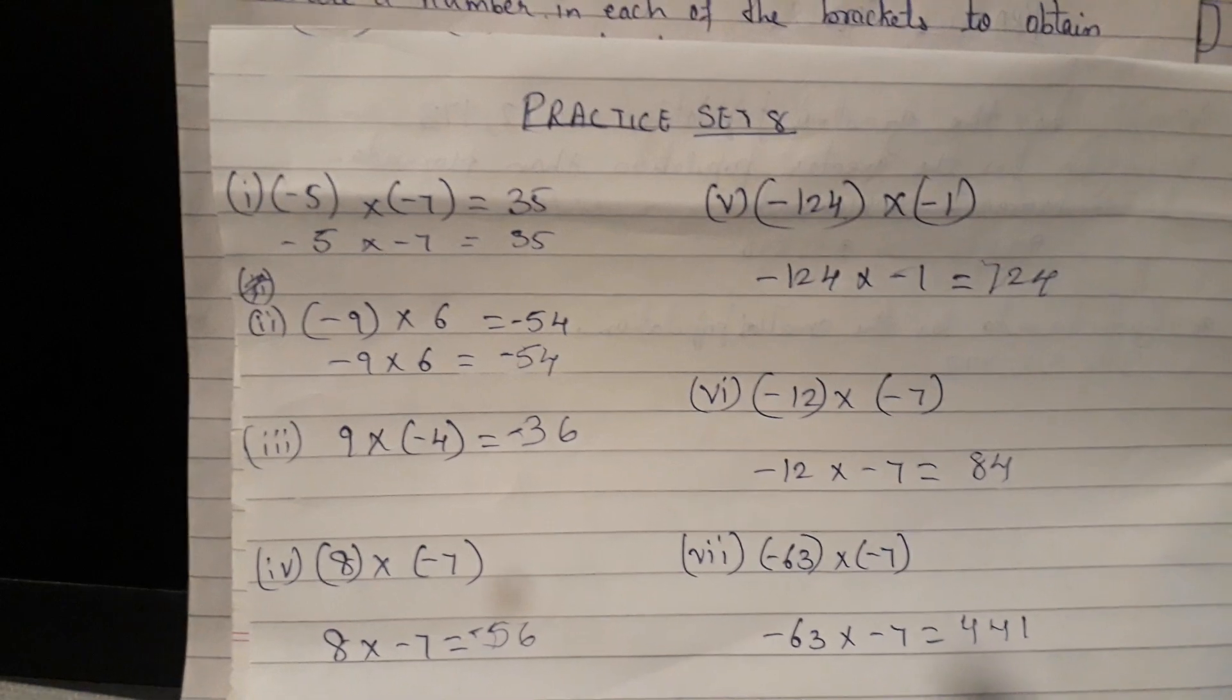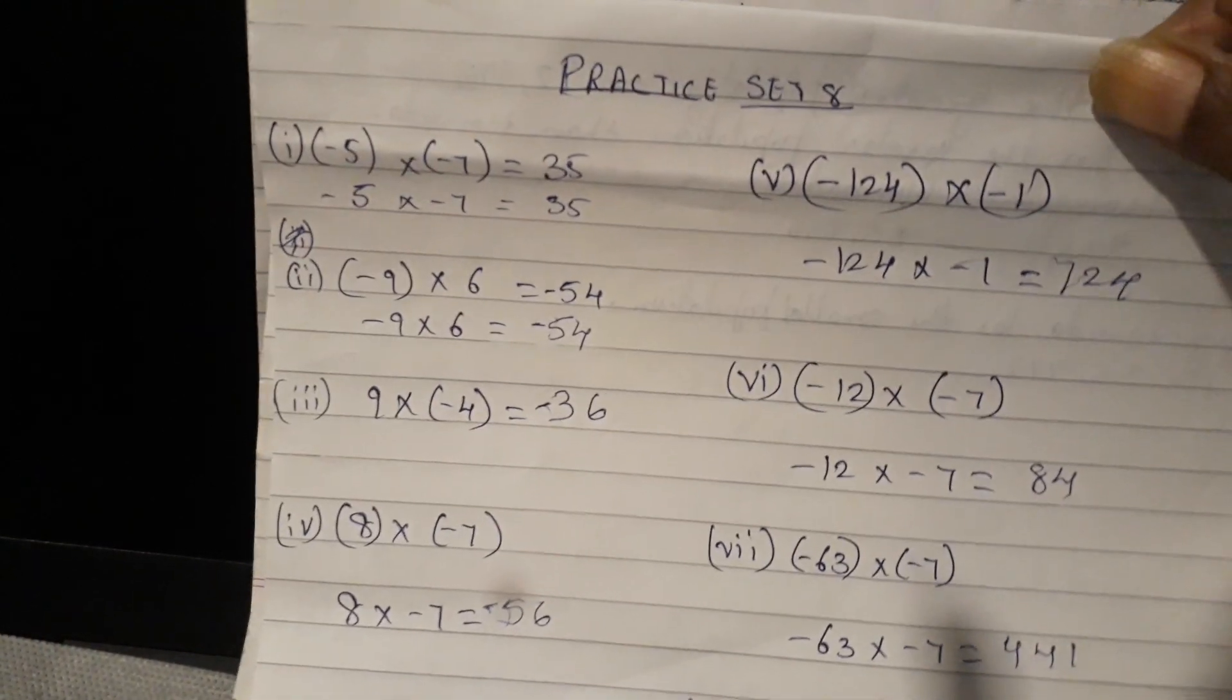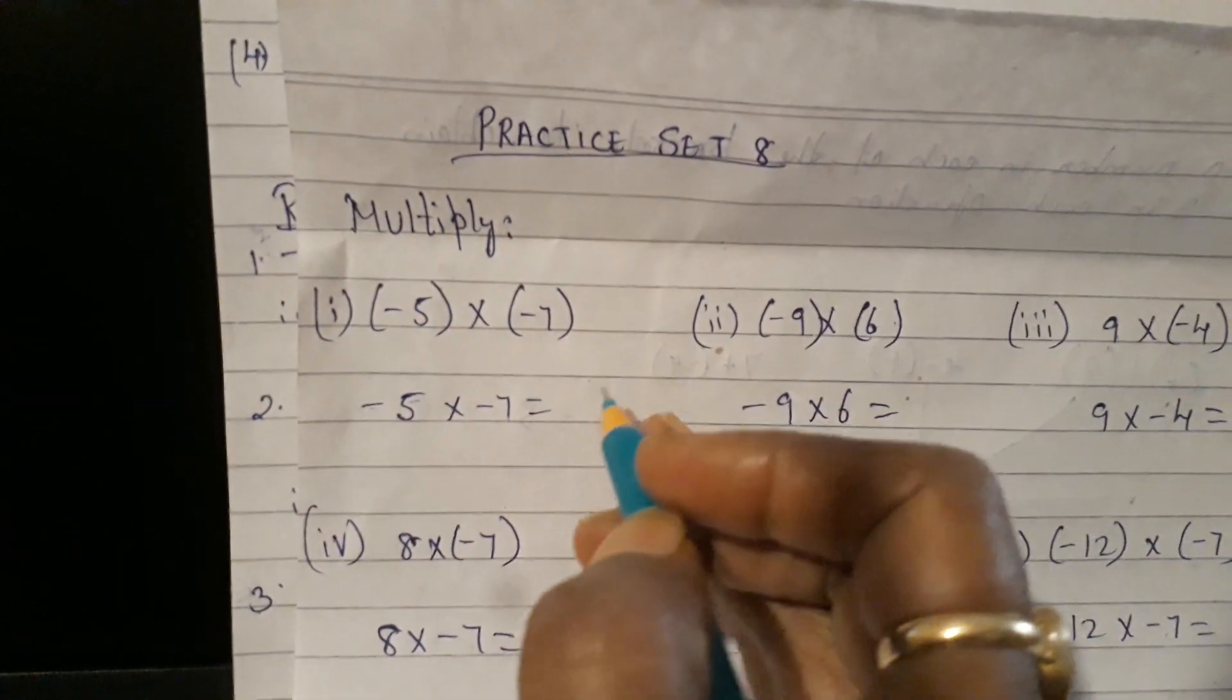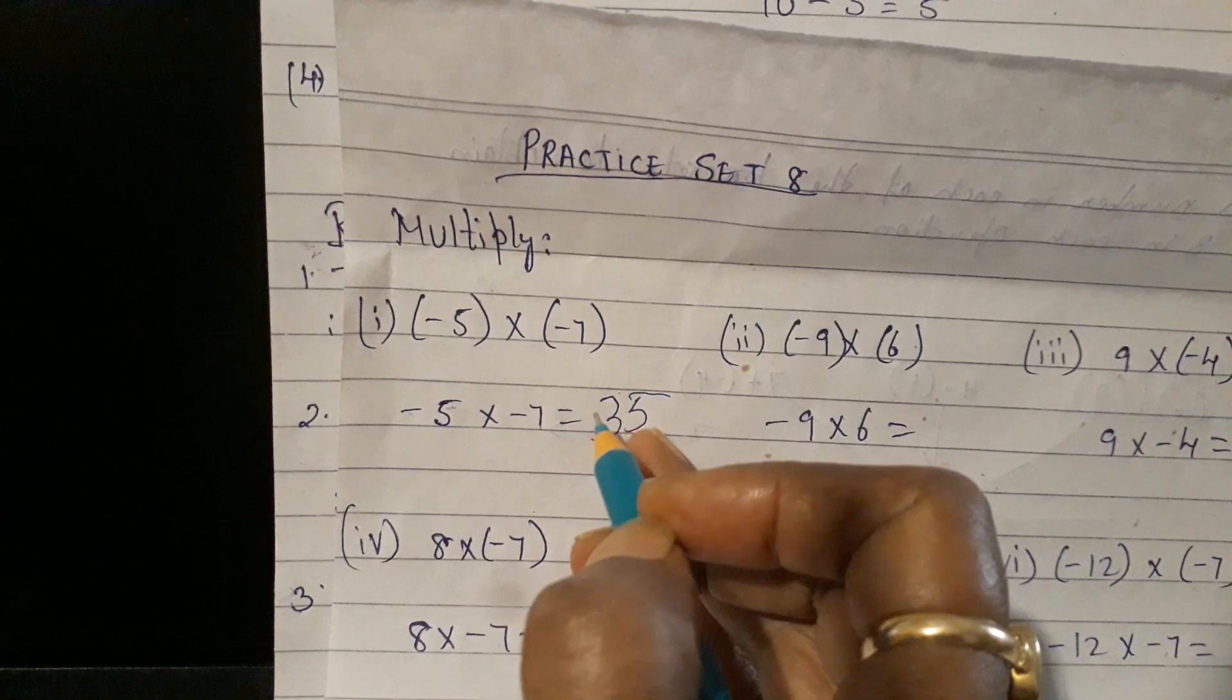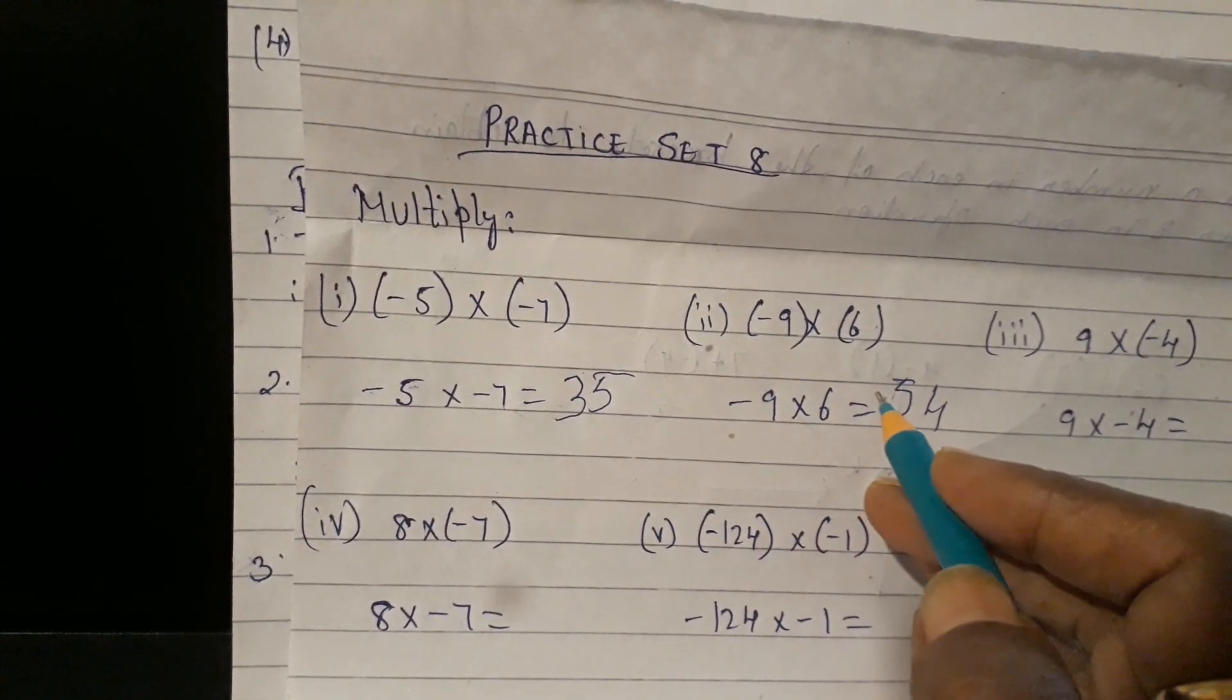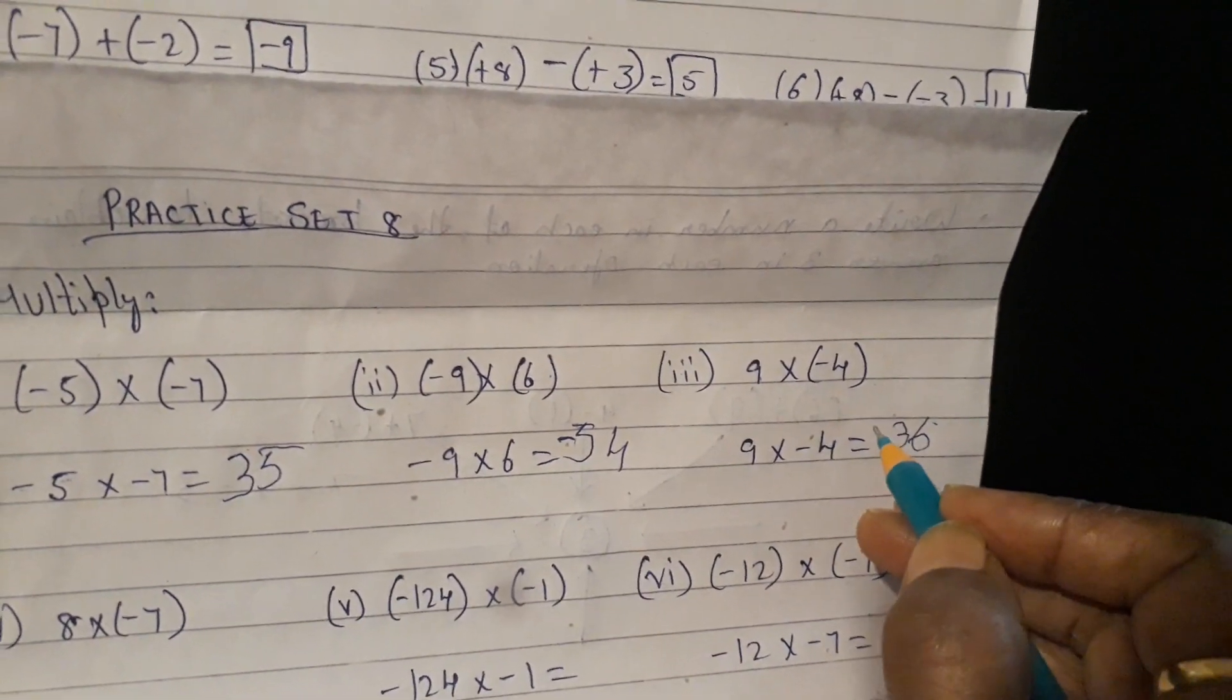Practice set 8 is multiply using the rules. So the first one says that minus 5 into minus 7 will give me answer 35. And how's that? Let's work that out. So minus 5 into minus 7. First, you just know your tables. So first, just write down 5 7 gives me how much? Oh yes, 35. Minus into minus, plus. Second one, minus 9 into 6. So first, 9 6. How much is 9 6? That's right, 54. Minus into plus will give me answer in minus. 9 into minus 4. So 9 4's are, oh yes, that's right, 9 4's are 36. Plus into minus, minus.